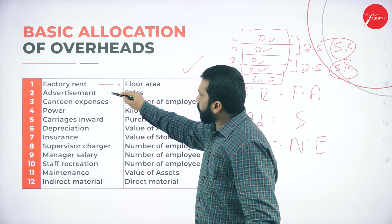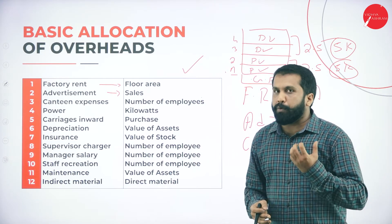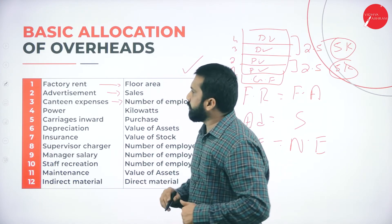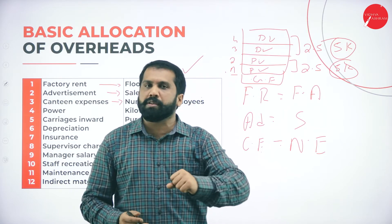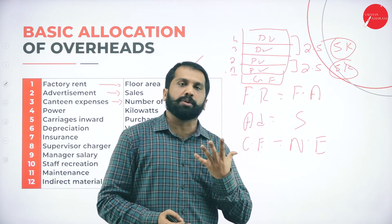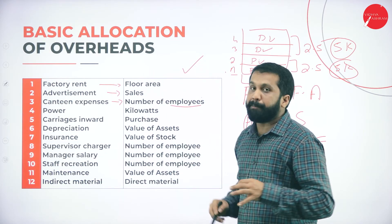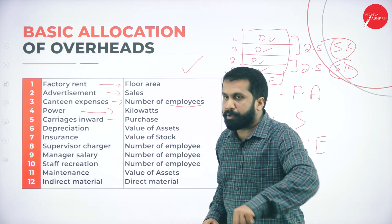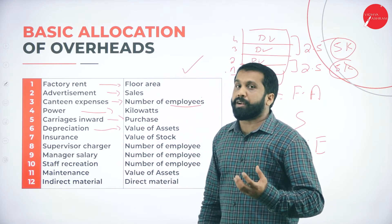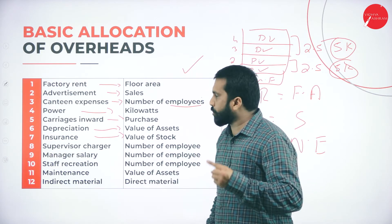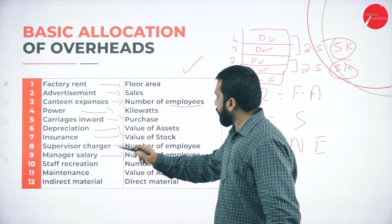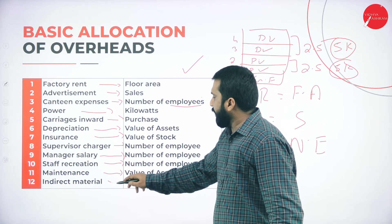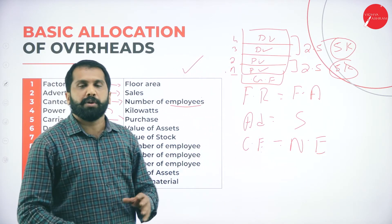Next, advertisement is distributed on the basis of sales — because you do advertisement to sell the product. Canteen expenses are distributed on the basis of number of employees. Power is distributed on the basis of kilowatts. Carriage inward is on the basis of purchases, because inward means within the premises. Depreciation is on the basis of value of the asset. Insurance is on the basis of value of stock. Supervisor charges — number of employees. Manager salary — number of employees. Staff recreation — number of employees. Maintenance — value of asset. Indirect material — direct material.